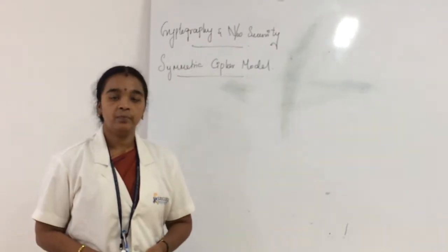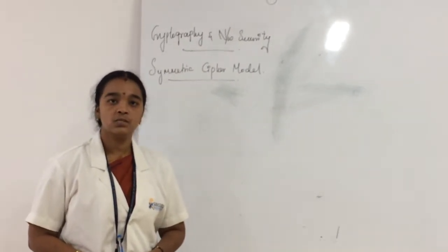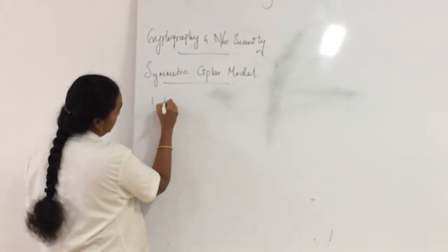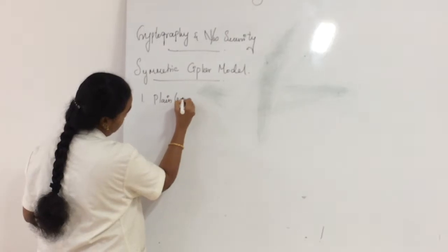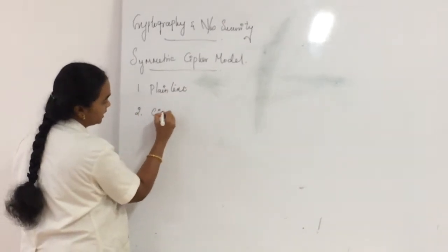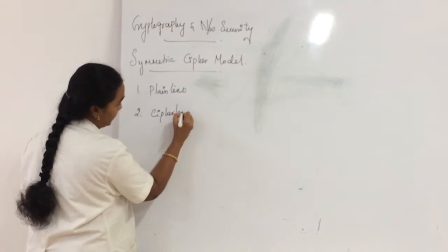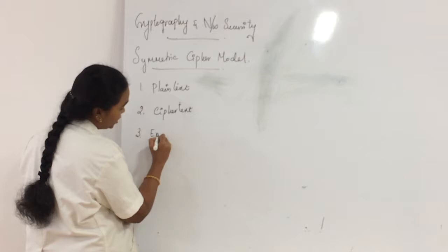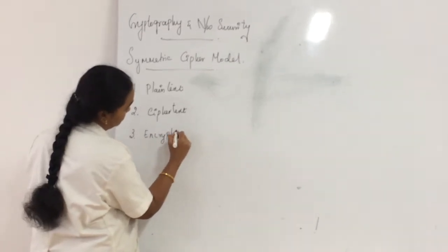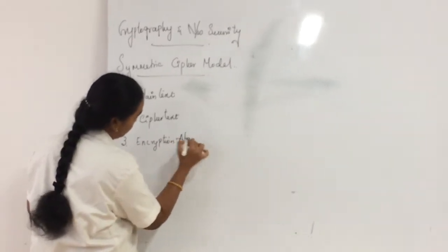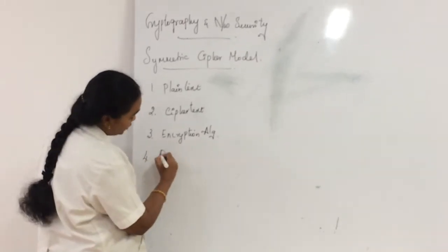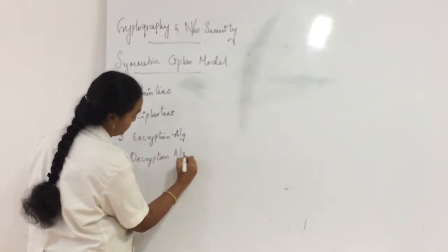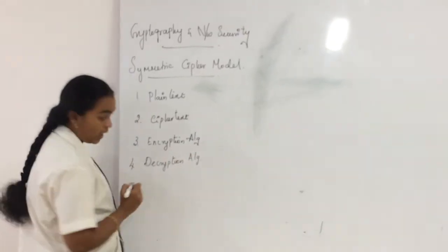Before beginning this topic, we must know some terms related to Cryptography. The first one is Plain Text, the next one is Cipher Text, the third one is Encryption Algorithm, the fourth one is Decryption Algorithm, and the last one is Key.